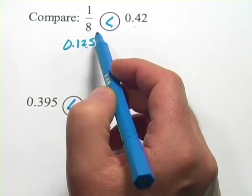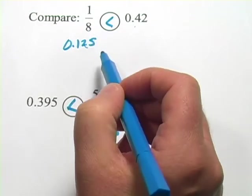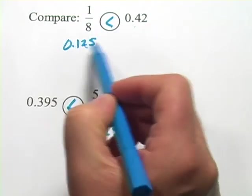One eighth is definitely less than one half, quite a bit less than one half. So just by thinking about it that way, you might have been able to guess that this is less than.